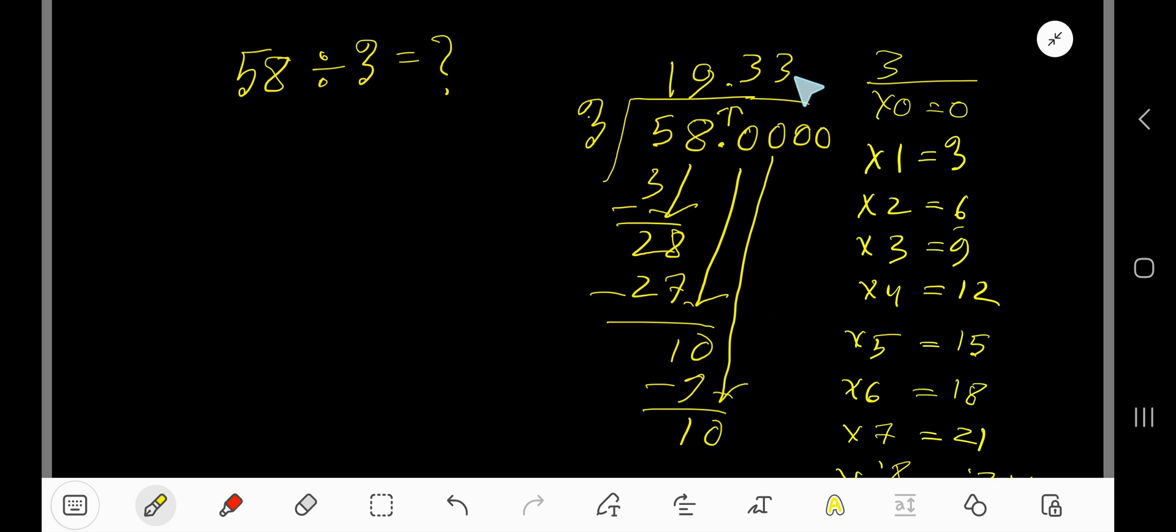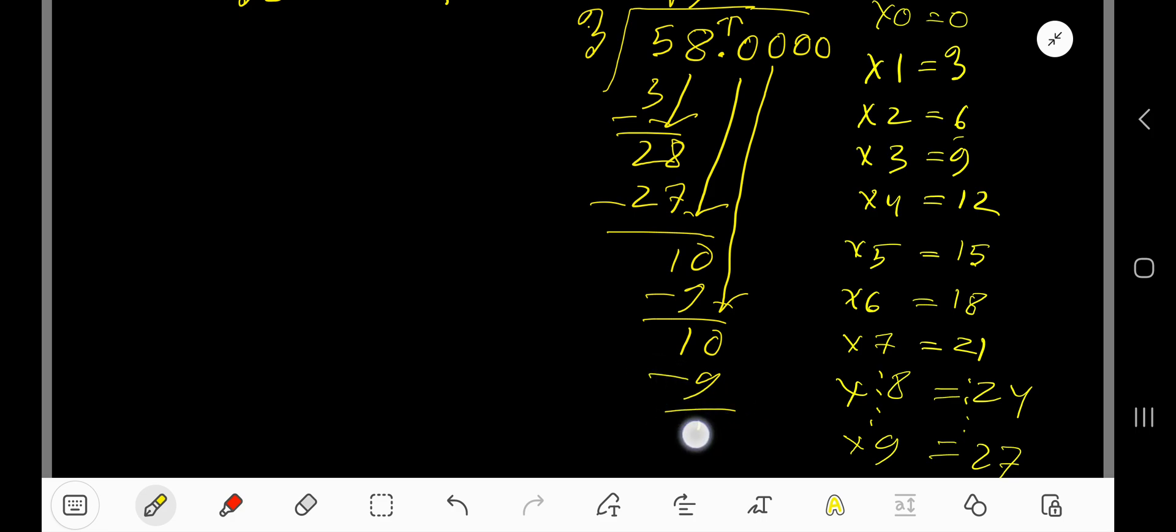Bring down another zero. 3 goes into 10, again 3 times. 3 times 3 is 9. Subtract.